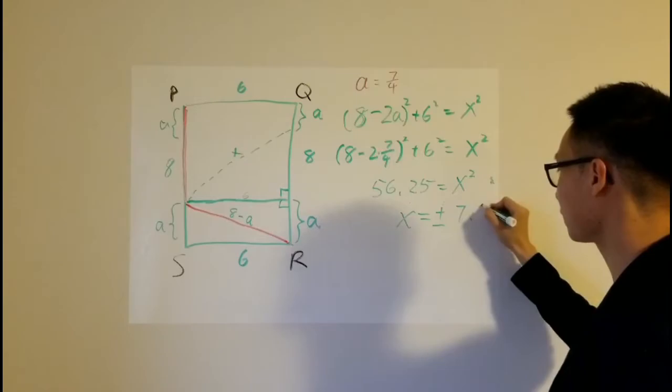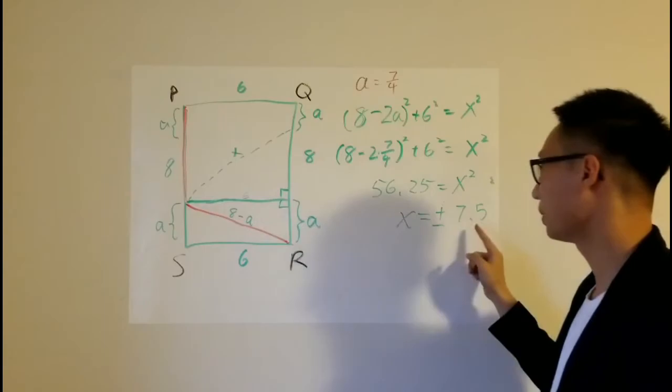And x would be plus or minus 7.5. And of course, since we're talking about the length, we can only take the positive value. Therefore, x is equal to positive 7.5.